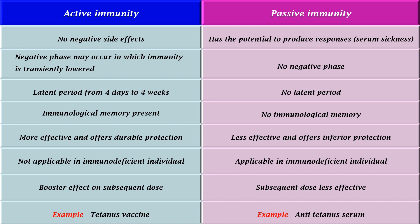Immunological memory is present in active immunity, and this immunity is more effective and offers durable protection, but immunological memory is absent in passive immunity, and this immunity is less effective and offers inferior protection. Active immunity is not applicable in immunodeficient individuals, and there is a booster effect on subsequent doses — for example, tetanus vaccine. Passive immunity is applicable in immunodeficient individuals, and subsequent doses are less effective — for example, anti-tetanus serum.